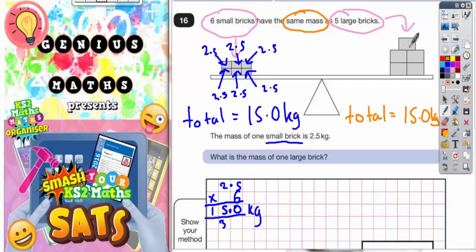So we've got to figure out the mass of one large brick. Well, we've basically got 1, 2, 3, 4, 5 large bricks and each brick is going to be the same weight. So if we share 15 kilograms, we need to share 15 kilograms by 5 bricks.